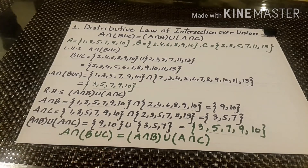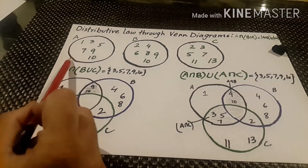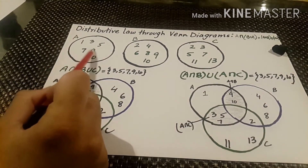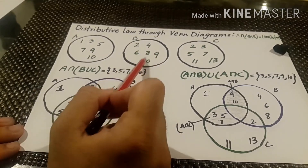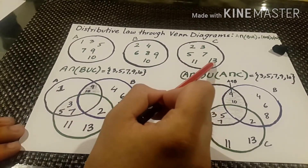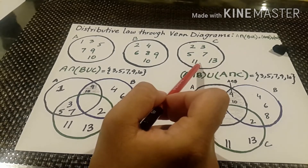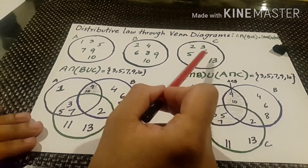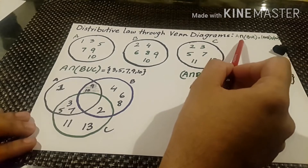Now we will solve it through the Venn diagram — distributive law through Venn diagrams. This circle shows set A with elements 1, 3, 5, 7, 9, 10. Set B has 2, 4, 6, 8, 9, 10. And C has 2, 3, 5, 7, 11, 13. The distributive law of intersection over union has two parts — the left hand side states A intersection (B union C).